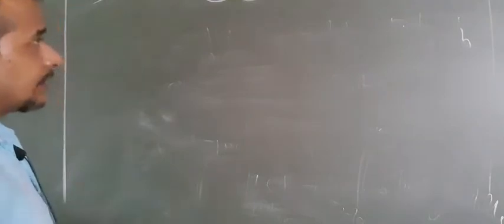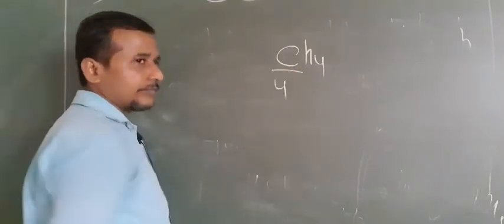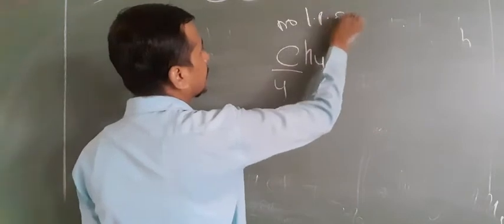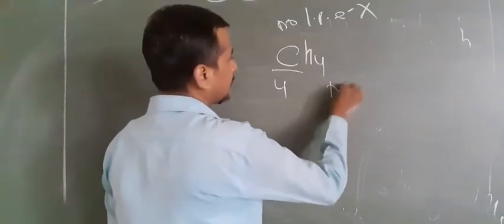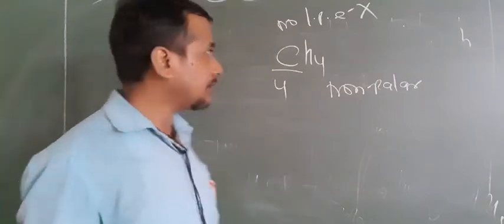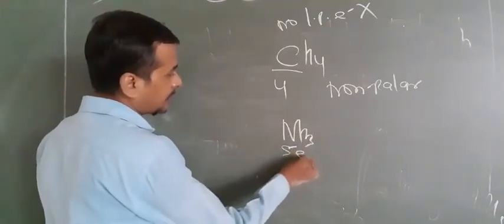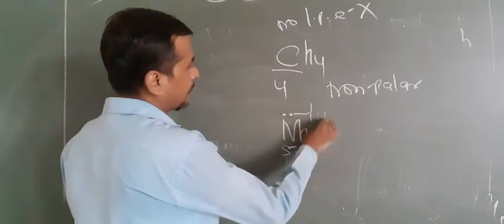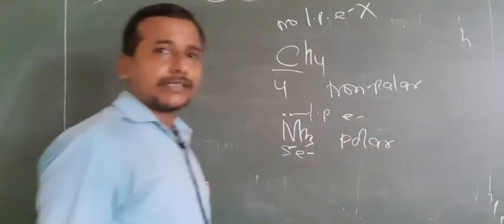Now, how can you find whether a given compound is polar or non-polar? Take CH4: the carbon has 4 electrons in the outer shell, and all 4 are bonded with hydrogen atoms, so no lone pair electrons are left. If the central atom has all electrons bonded, the compound is non-polar. But take ammonia (NH3): nitrogen has 5 electrons in the outer shell, 3 are bonded with hydrogen, but 2 electrons are left as a lone pair. Due to the presence of a lone pair, it behaves as polar.